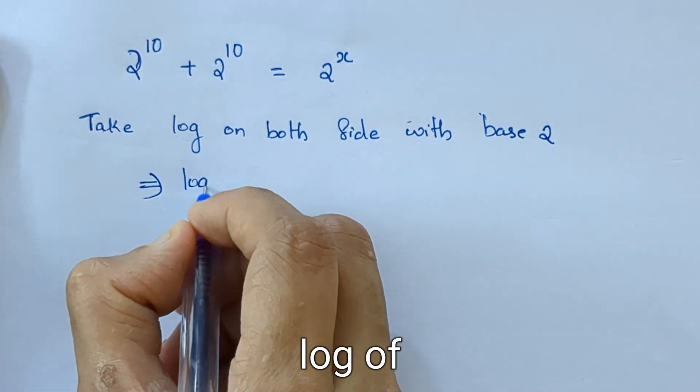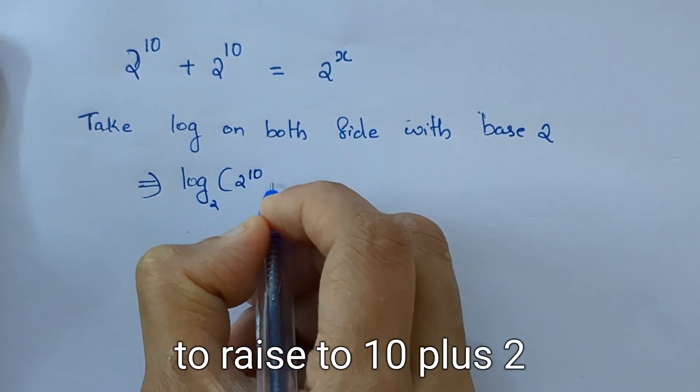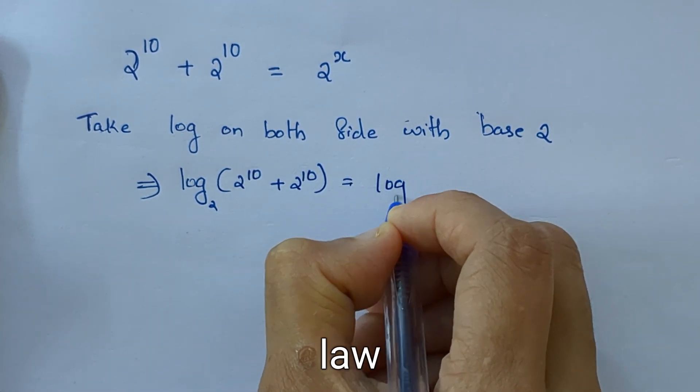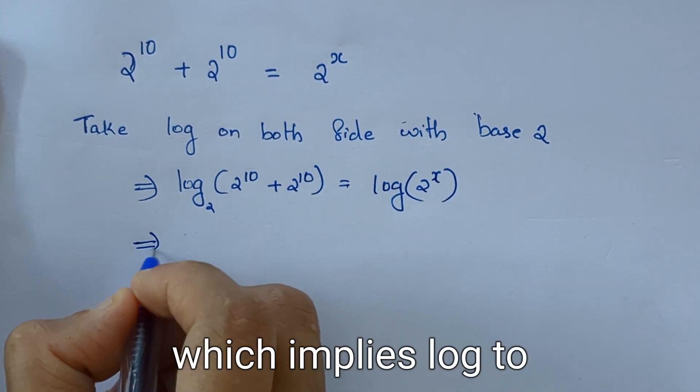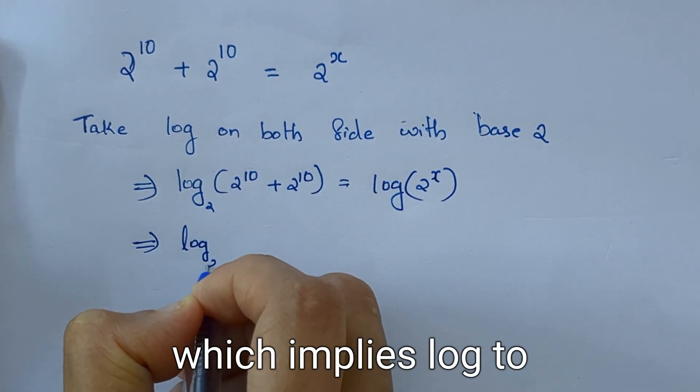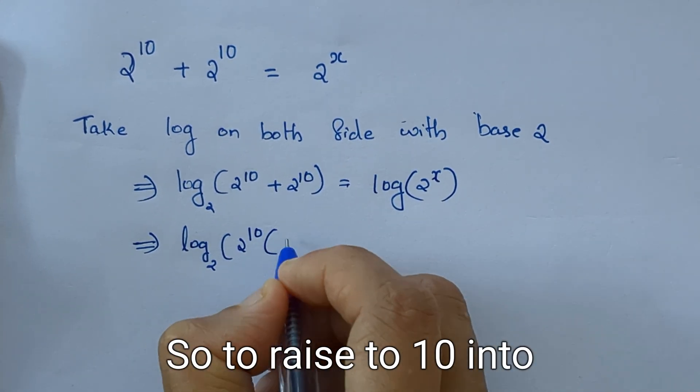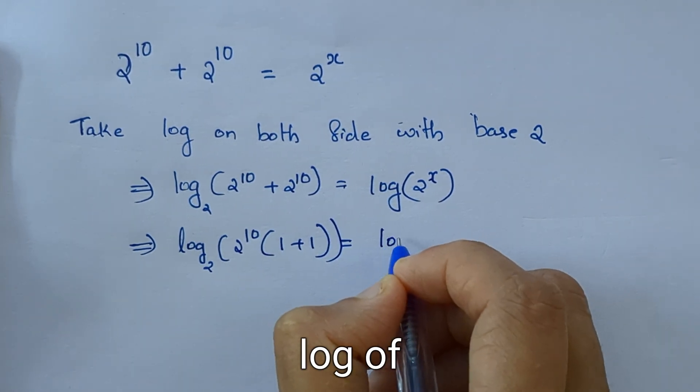Log of 2 raised to 10 plus 2 raised to 10 equal to log 2 raised to X, which implies log to 2 raised to 10 can be taken outside, so 2 raised to 10 into 1 plus 1.